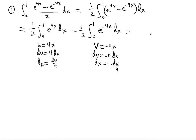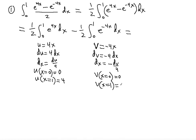We also have to change the limits of integration. For u as a function of x: when x equals 0, u equals 4 times 0 which is 0; when x equals 1, u equals 4 times 1 which is 4. For v as a function of x: when x equals 0, v equals 0; when x equals 1, v equals negative 4. Don't be afraid of the minus sign — we'll work through that. For the first integral the new limits are 0 to 4.